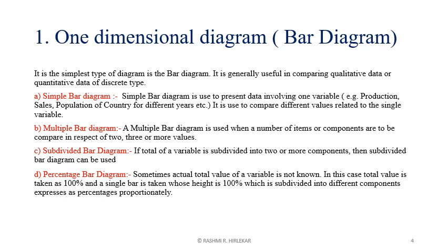Now we will see the meaning of multiple bar diagram. A multiple bar diagram is used when a number of items or components are to be compared with respect to two, three, or more values. In this case, the bars or rectangles of different components are plotted on the x-axis adjacent to each other. The height is proportional to the values of the component and variable.